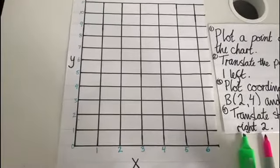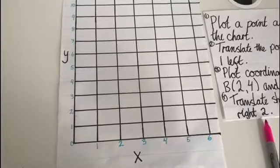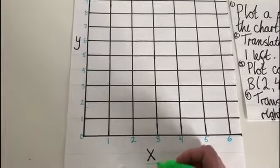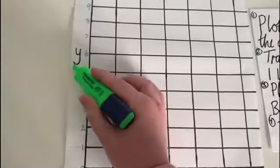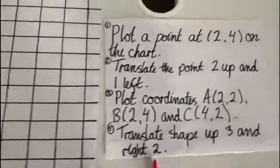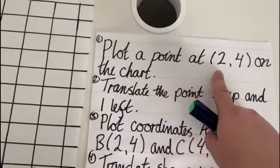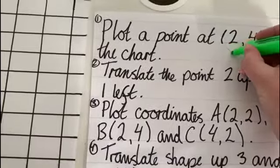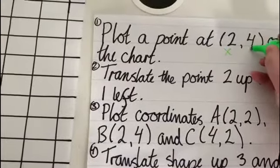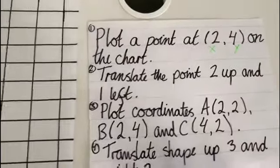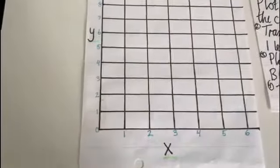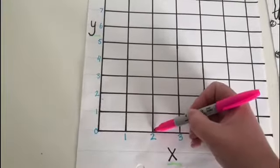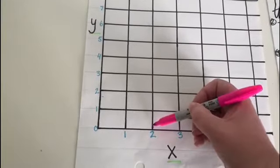To start we're going to look at how to plot a coordinate on the graph. The first step is to remember that when looking at the numbers the x-axis will always come first followed by the y-axis. So over here it says to plot a point at 2 and 4 on the chart. So 2 will be the x-axis and 4 will be the y-axis. So if I go back to my graph I will find the 2 along the x-axis and then from the 2 I will go up to the 4 along the y.